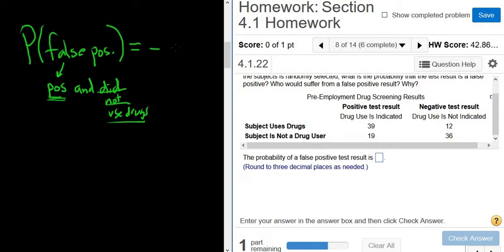Okay, this is a fraction. So on the bottom, you always have the total. So to figure out the total, what you do is you add up all the numbers.